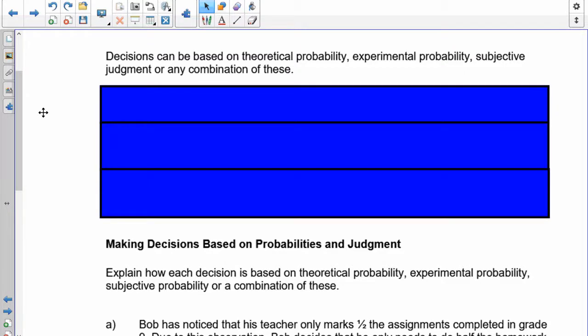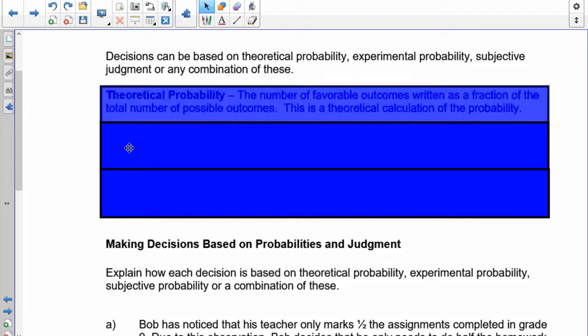Now, grade nine, when you make a decision, when given possibilities and probabilities, you can make it based on one of three types of decisions. The first one is called theoretical probability. That means that you take a look at the theory. The second one is called experimental probability, and that's where you do an experiment. And the third one is subjective judgment, or you can also have any of these combinations, but subjective judgment is your feelings.